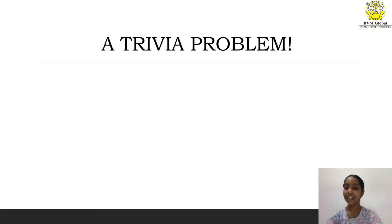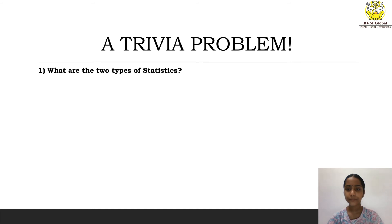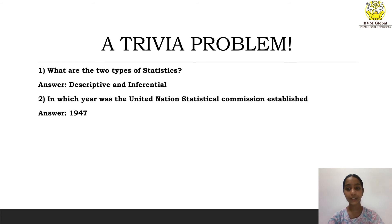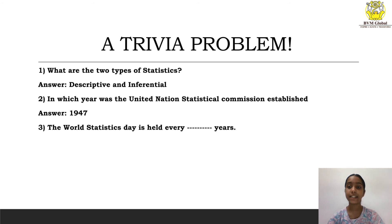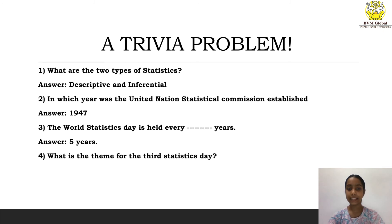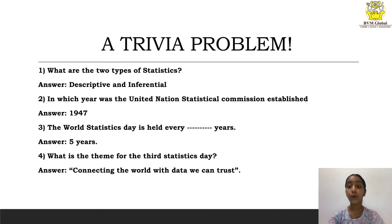It's trivia time. Let's get started. First question: What are the two types of statistics? The two types of statistics are descriptive and inferential. Second question: In which year was the United Nations Statistical Commission established? The United Nations Statistical Commission was established in the year 1947. Third question: The World Statistics Day is held every how many years? The World Statistics Day is held every five years. Fourth question: What is the theme for the third Statistics Day? The theme for the third Statistics Day is 'Connecting the World with Data We Can Trust.'